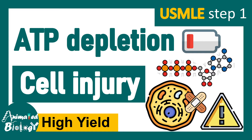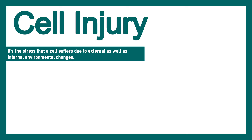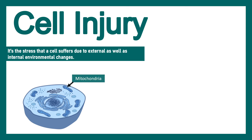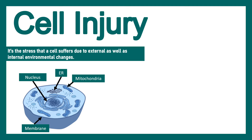In this video we'll be talking about ATP depletion and its relation with cell injury. Cell injury is due to the stress that a cell suffers due to external or internal environmental changes. There are many organelles such as mitochondria, endoplasmic reticulum, nucleus, and membrane that are highly susceptible to this kind of cellular injury.